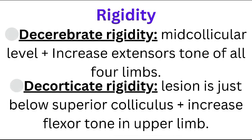There are two types of rigidity. Decerebrate rigidity has a lesion at the mid-collicular level with increased extensor tone of all four limbs. Decorticate rigidity has a lesion just below the superior colliculus with increased flexor tone in the upper limb only.